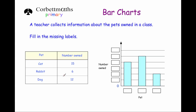Let's start with the pets. Rabbits — only 6 were owned, so that's the least and it'll be the smallest bar. The smallest bar is the last one, so that's rabbits. The tallest bar is cats because there are 15 cats owned — so cats is the second bar. And finally dogs: there are 12 owned, so that has to be the first bar. So: dog is the first bar, cats is the second bar, and rabbits is the last bar.